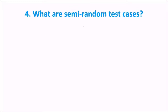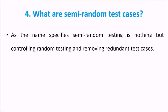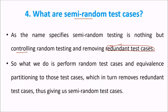The next question is: what are semi-random test cases? Semi-random testing is controlling random testing and removing the redundant test cases. If you manage to control the random tests by removing redundant test cases, you are making test cases in a semi-random manner. What we do is perform random test cases and apply equivalence partitioning to those test cases, which removes redundancy, thus giving semi-random test cases.